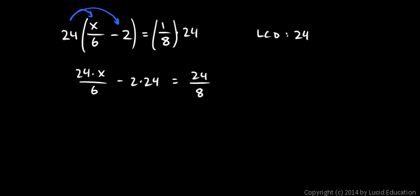When you reduce these fractions, the fractions entirely disappear. The 24 divided by 6 is 4, and the 24 divided by 8 is 3.